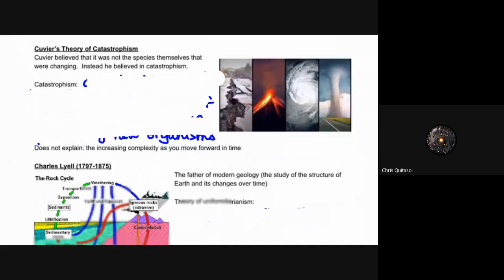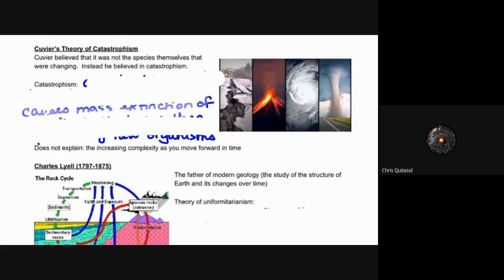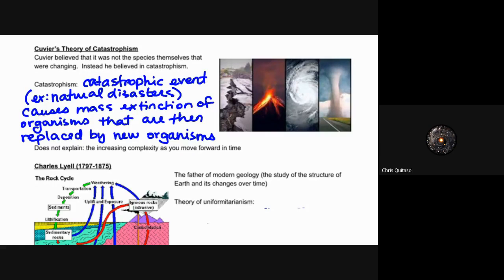Cuvier came up with the theory of catastrophism. Cuvier believed that it was not the species themselves that were changing. Instead, he believed that catastrophes were coming to fruition and that these catastrophes led to changes that allowed for species to evolve or change themselves. Catastrophic events like natural disasters could cause mass extinction of organisms that are then replaced by new organisms. It does not explain the increasing complexity as you move forward in time, but his main idea was that we don't see dinosaurs today, and so therefore a catastrophe completely wiped them out. As a result of them being completely wiped out, new organisms could take their place. At the time it was revolutionary and incredibly supported, and there are aspects of his theory and ideas that still maintain in the common zeitgeist of the ideas that we adhere to with regards to evolution.